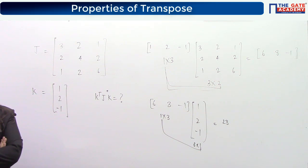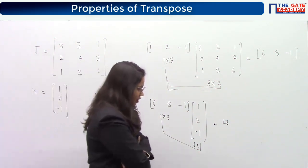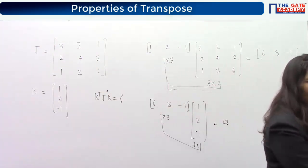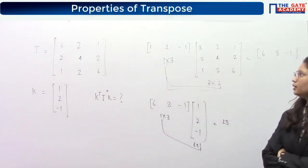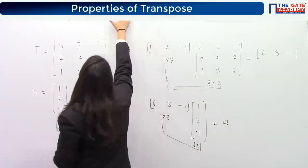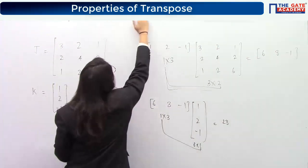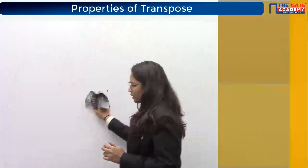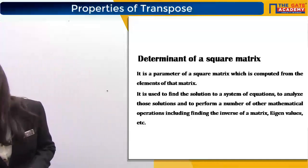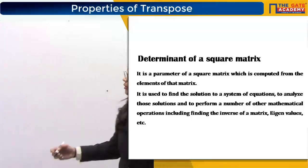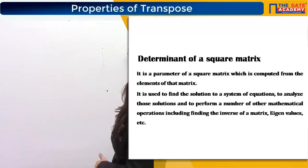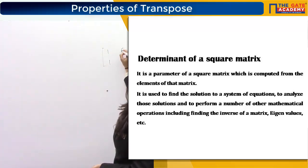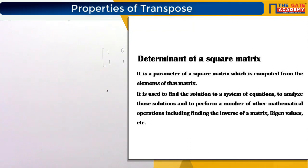Now we start the most important topic: determinant of a square matrix. Recall from the previous class that a 2×2 matrix has a physical representation. For example, the matrix with rows [1, 1] and [0, 1] represents a parallelogram formed by the vectors (1,1) and (0,1).